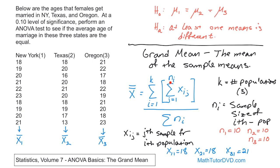Once you've added up all values from population 1 — running j from 1 up to the sample size — you pop out and increment I. You go to the second population, so now I is 2, and you add up all the values from population 2. Then you increment I to 3 and add up all values from population 3.